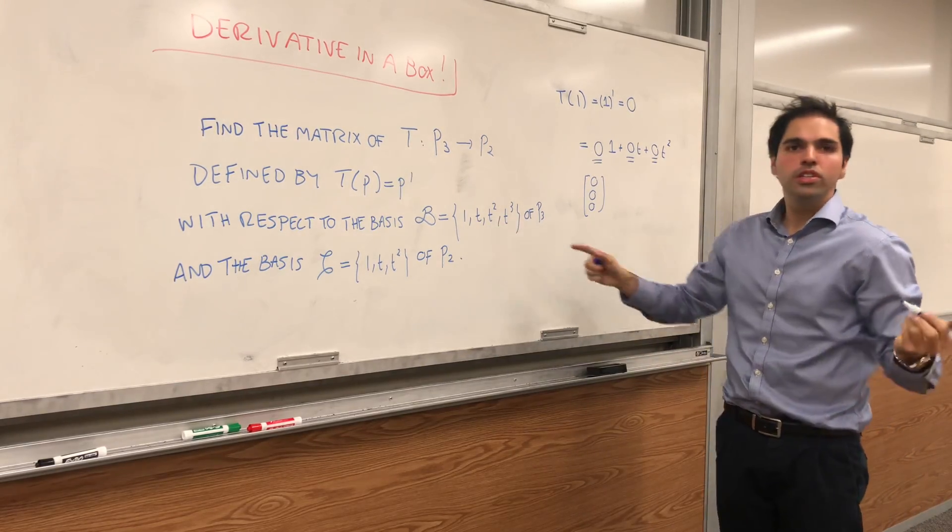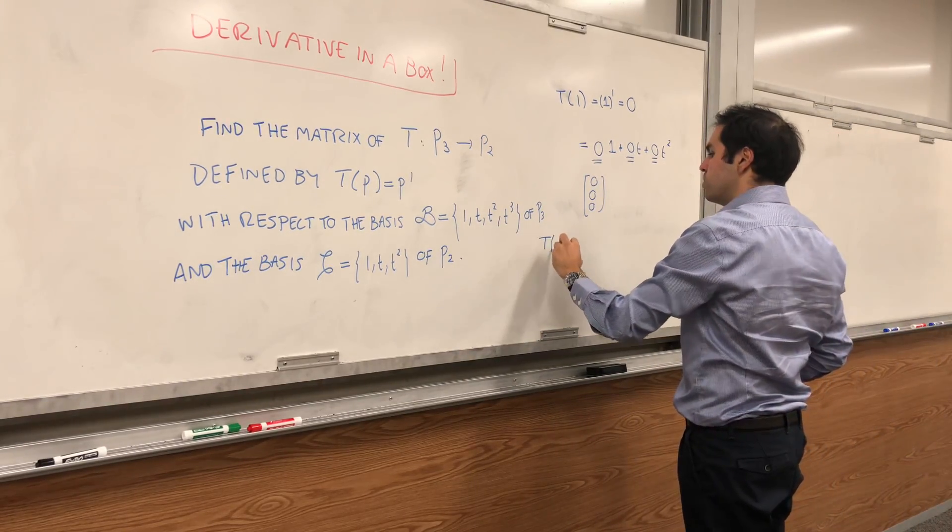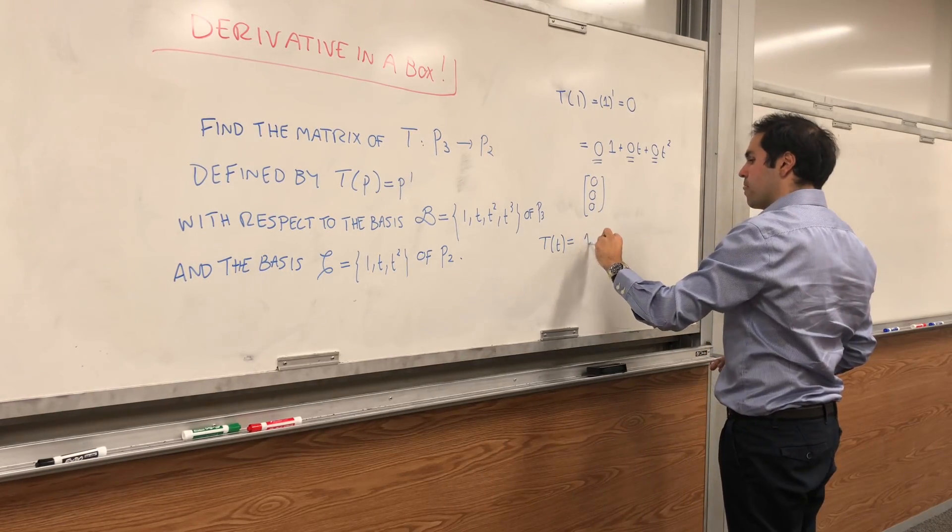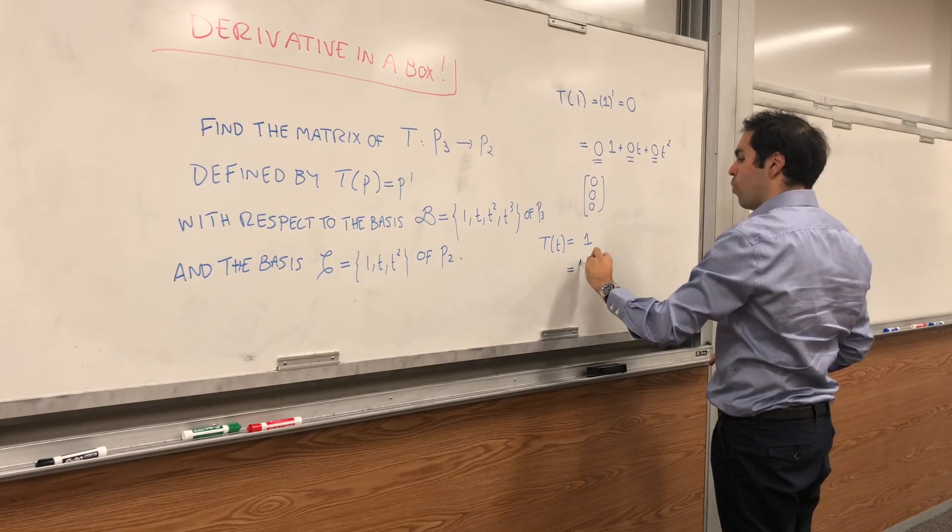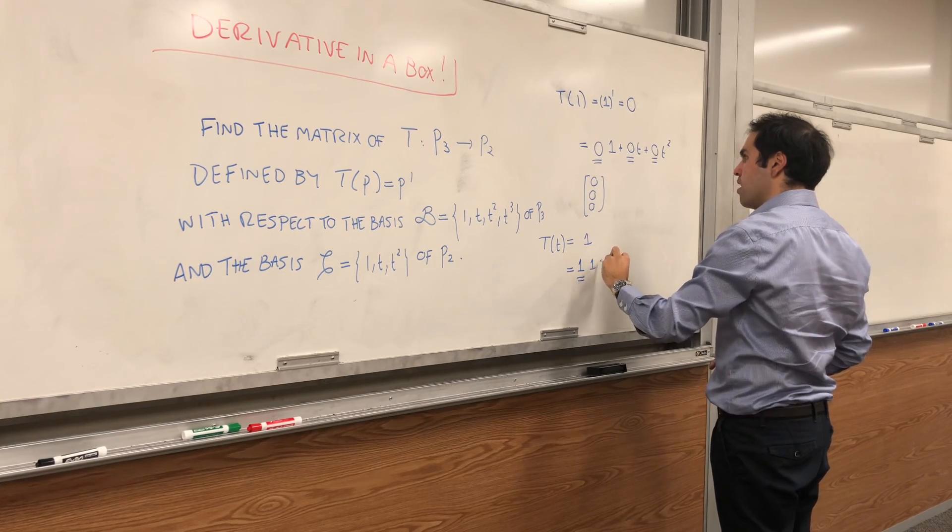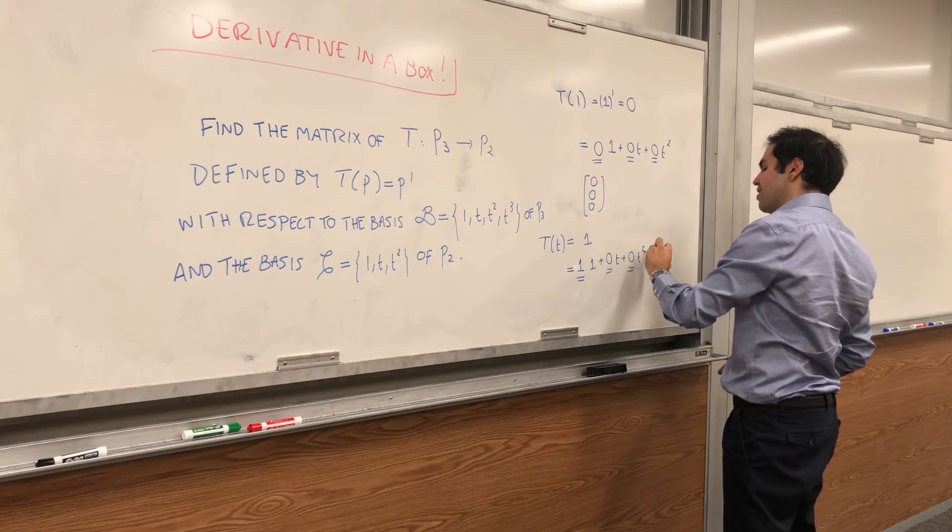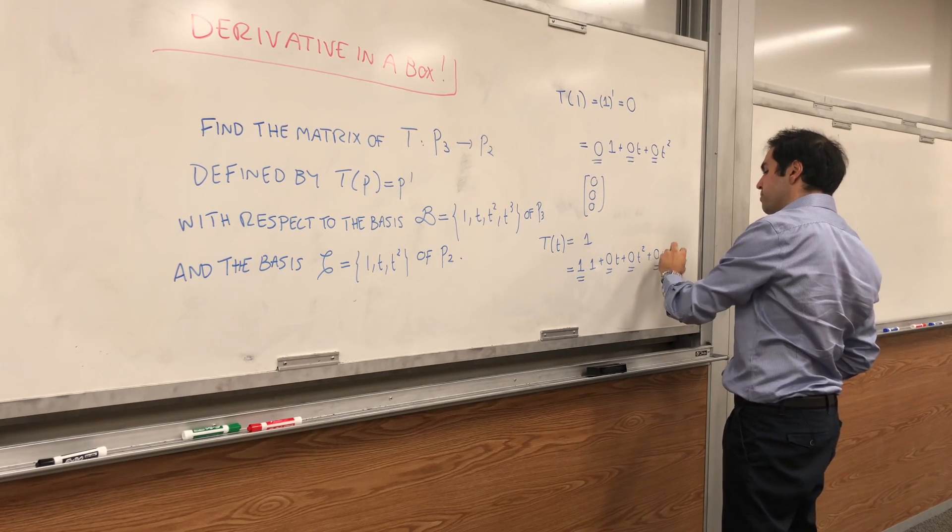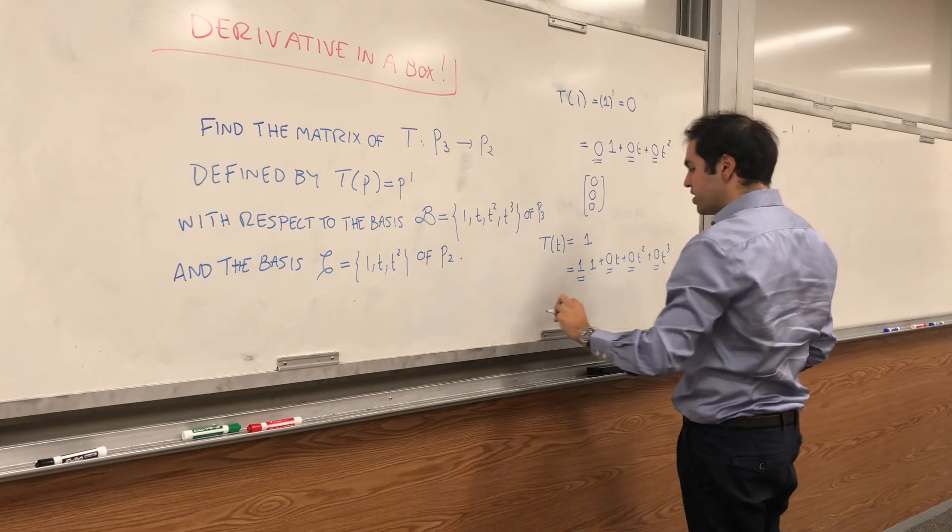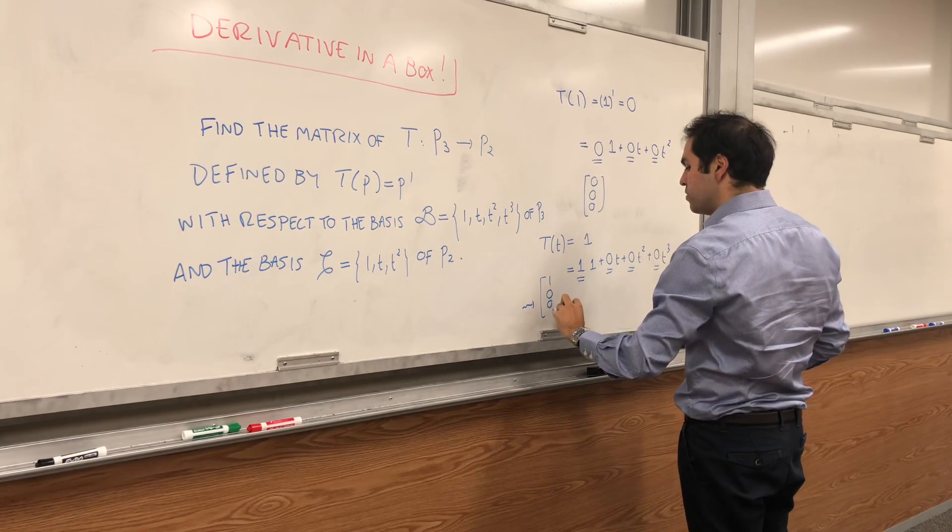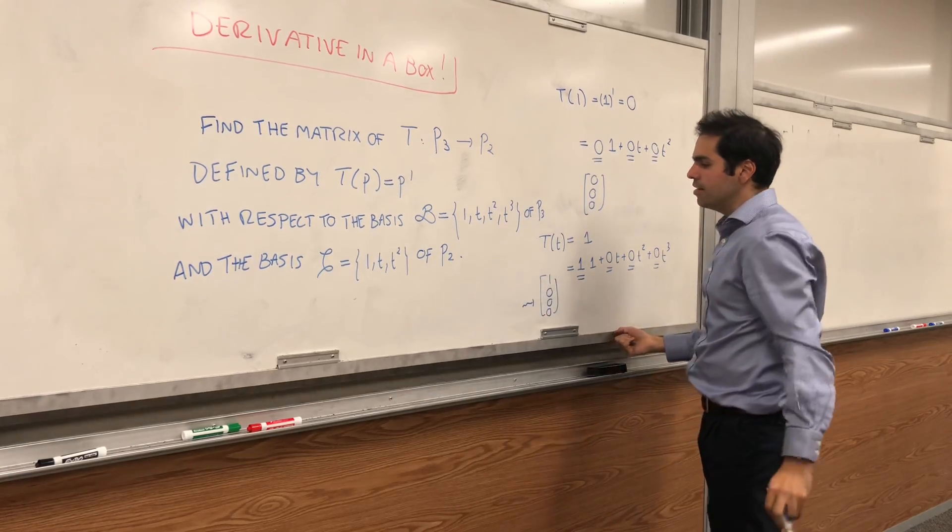And then you just need to continue with every vector here. So T of t is t prime, which is 1. And that's just 1 times 1 plus 0 times t plus 0 times t squared, which tells you that the second column will be 1, 0, 0.